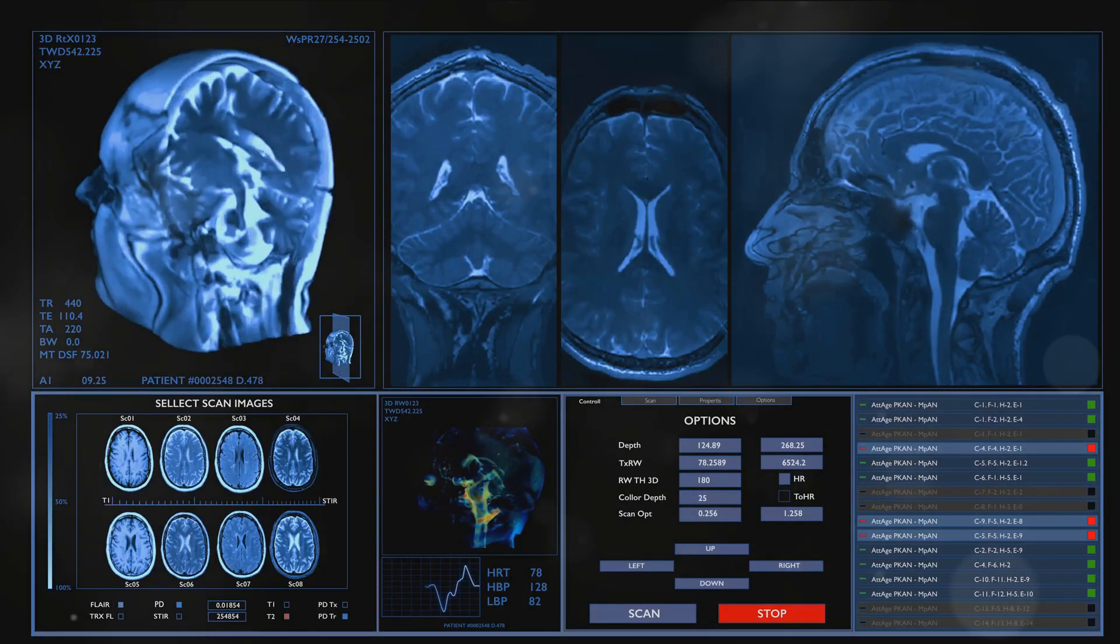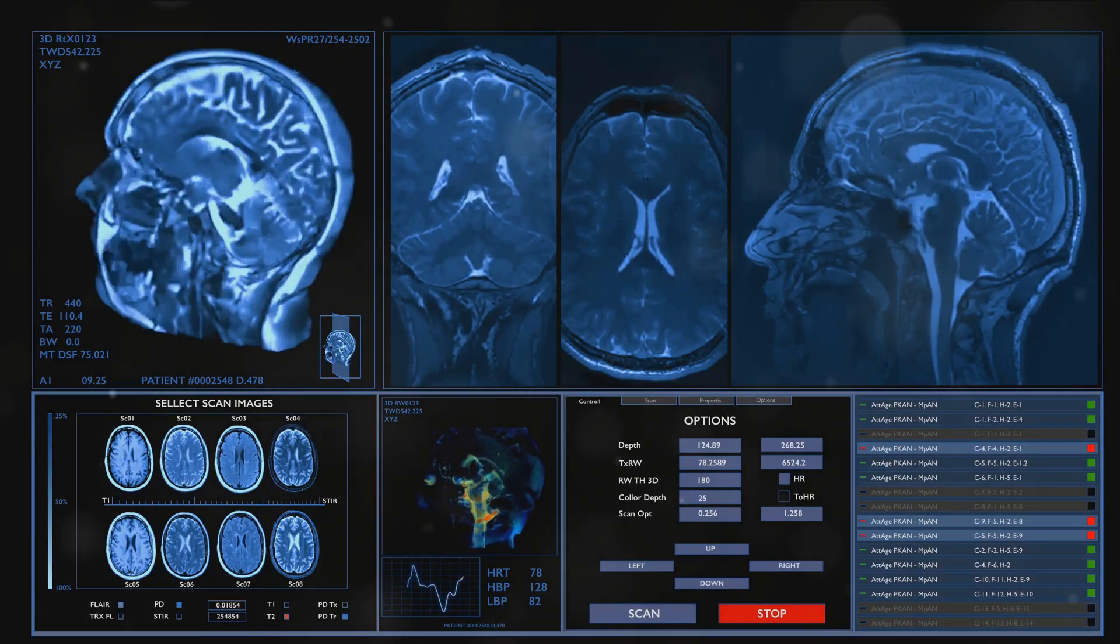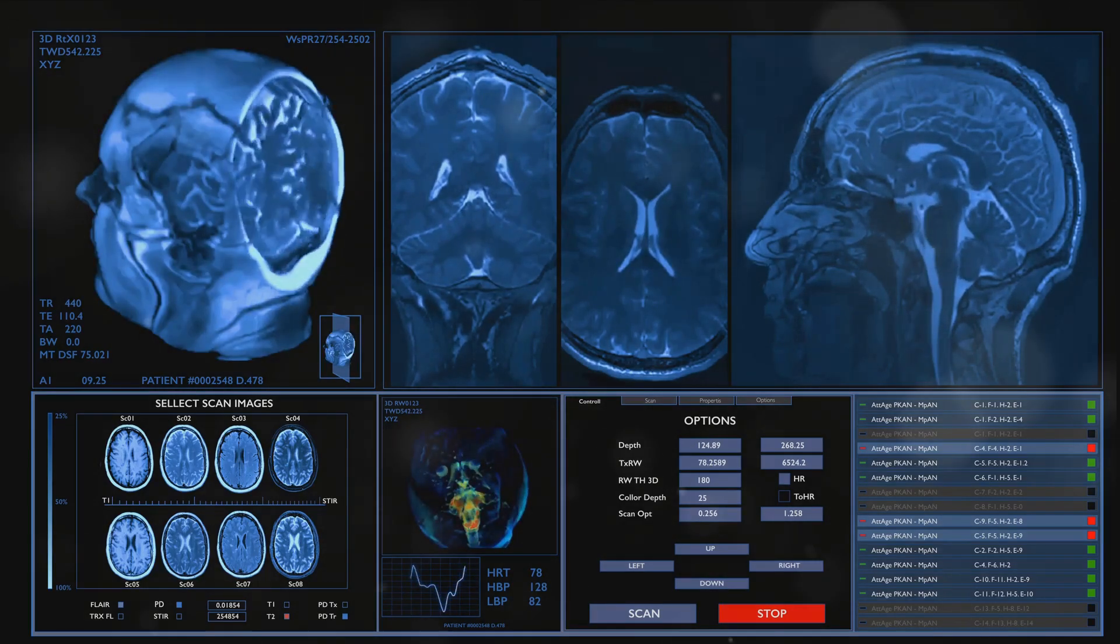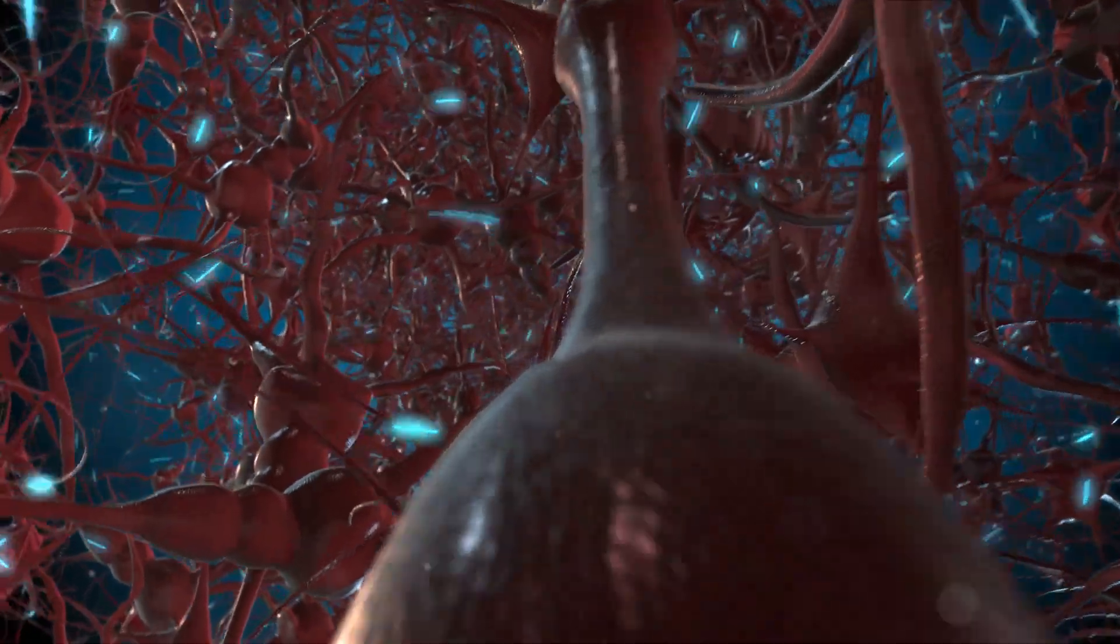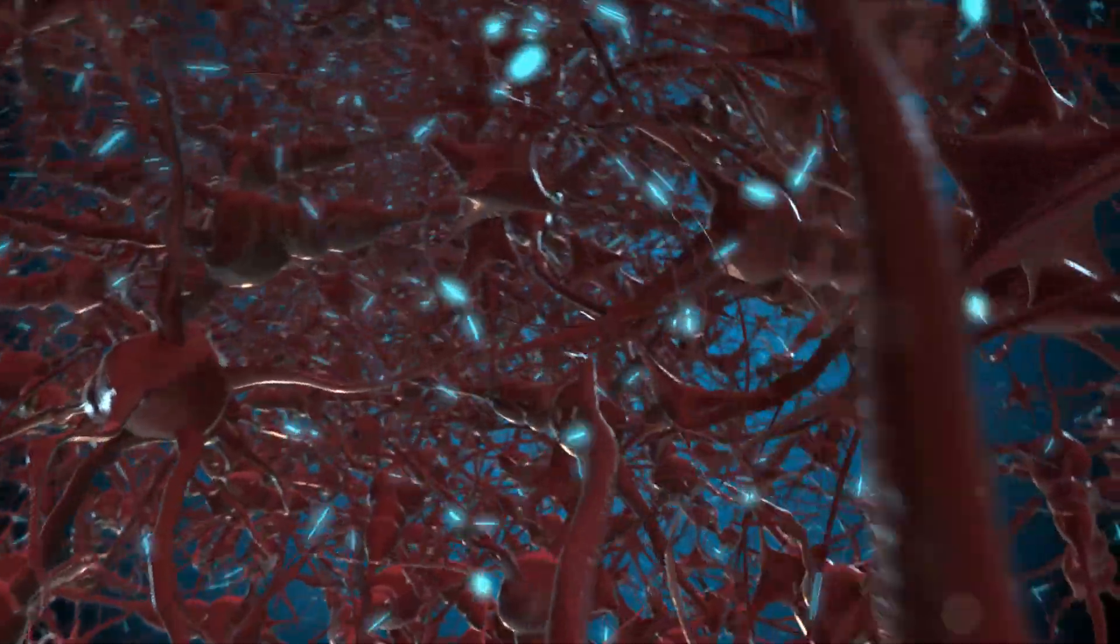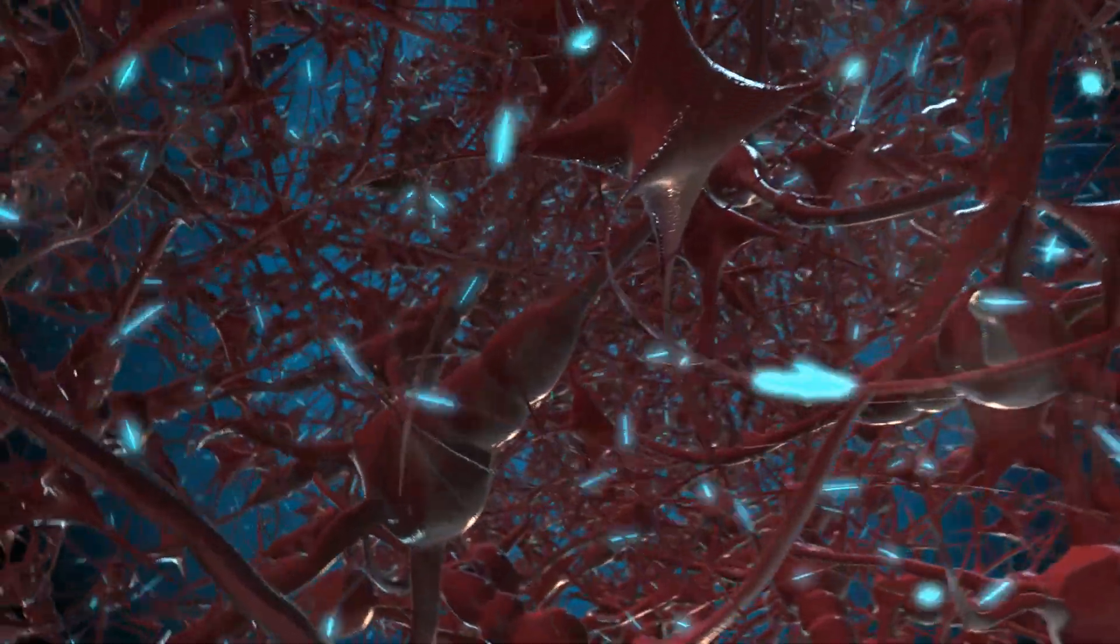The research was further bolstered by the use of functional MRI data from the Human Connectome Project, a government initiative aimed at mapping all networks within the human brain. This added a layer of depth to the findings, highlighting the interplay of networks that contribute to our awareness and alertness.